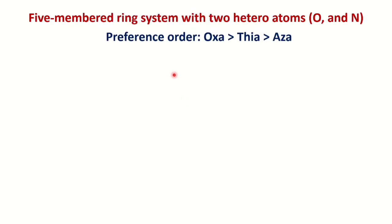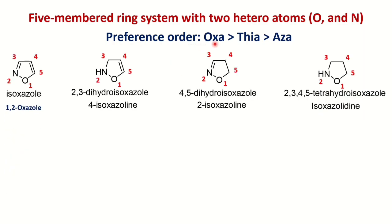When more than one hetero atom is present, a prefix preference order applies: oxygen > sulfur > nitrogen. If oxygen and nitrogen are both present, oxygen gets the lower number. The compound with oxygen at position 1 and nitrogen at position 2 is called 1,2-oxazole (trivial name: isoxazole), written as 'oxa' + 'aza' + 'ole'. Partially saturated and fully saturated isoxazole ring systems also exist.